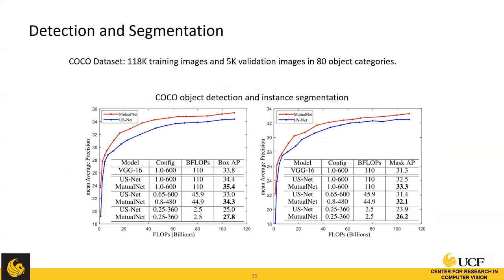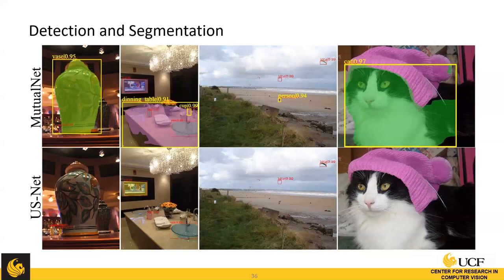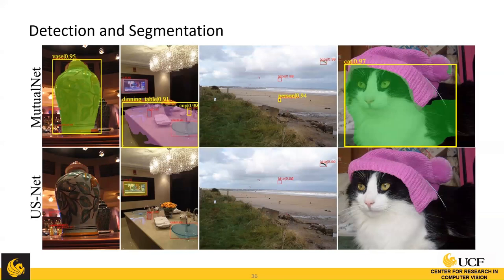On transfer learning for COCO object detection and instance segmentation, we outperform USNet in both tasks across different FLOPs levels. Visual examples show our method is more robust to extremely large and extremely small objects compared to USNet, because our model learns multi-scale representations.